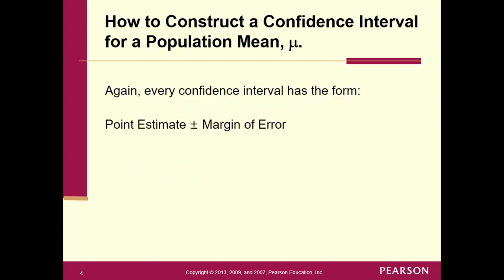Every confidence interval has the form: point estimate plus or minus the margin of error. The margin of error is the critical value times your standard error. No matter what confidence interval you're making, it has to fit this form — and the same holds true for 8.3, a confidence interval for mu.